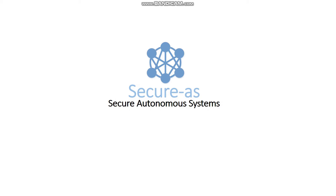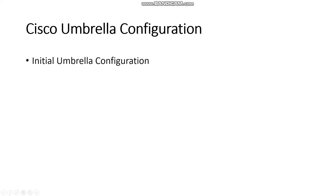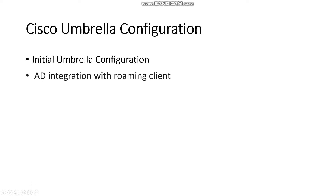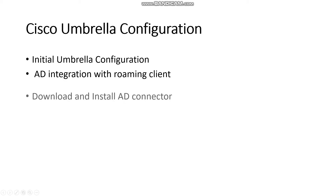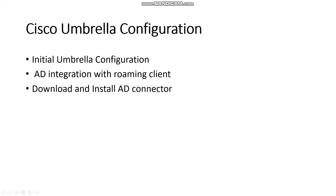Hi and welcome to Secure Autonomous Systems Umbrella configuration. This section is just to configure the initial build and the initial Umbrella integration. We start off with integrating our AD server with Umbrella, pointing towards Umbrella public DNS servers as forwarders. We then look at AD integration with the roaming client installed on endpoints, and finally we download and install the AD connector, which is used to manage multiple Active Directory domains.